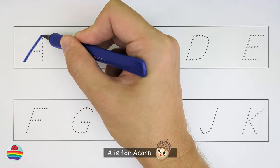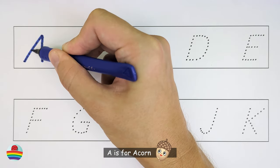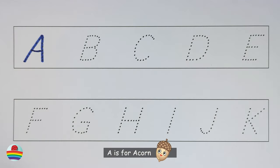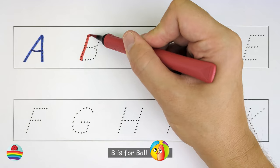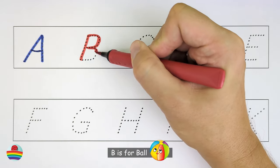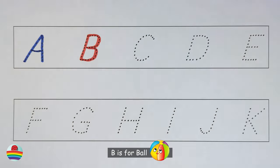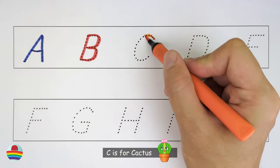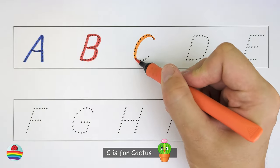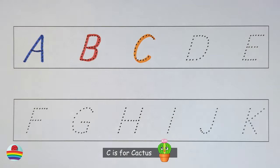A. A is for Acorn. A. B. B is for Ball. B. C. C is for Cactus. C.